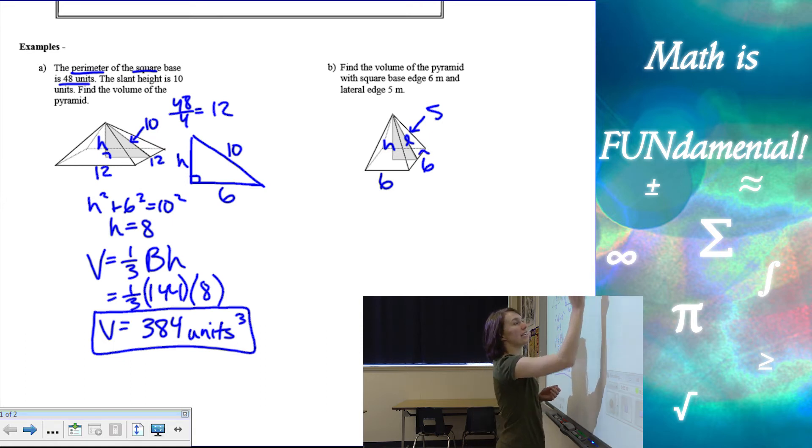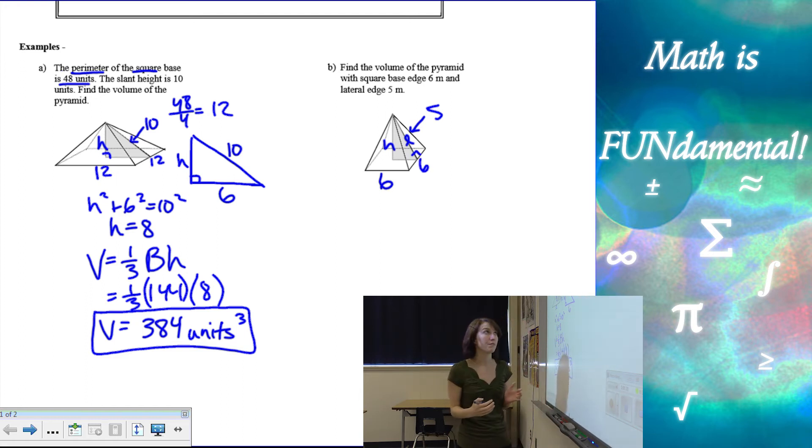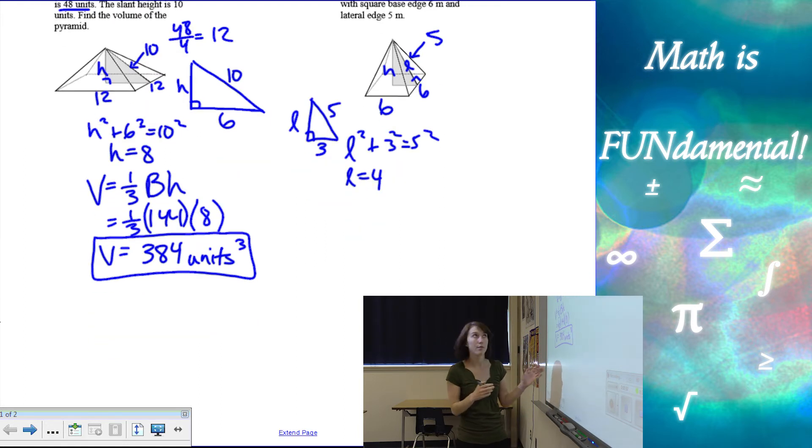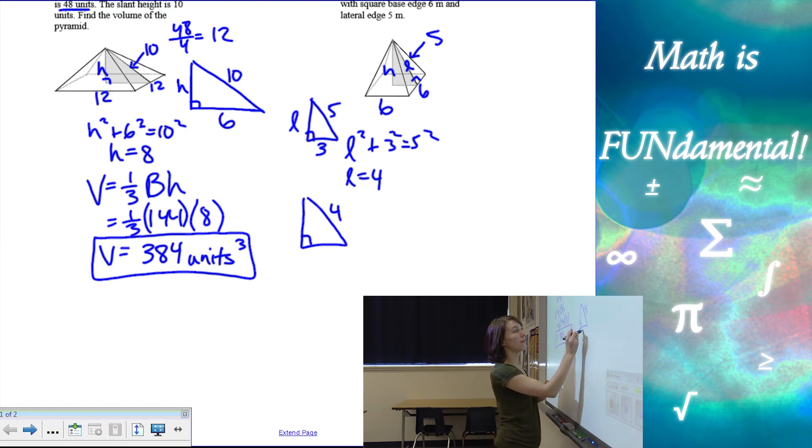So first thing we should know is that the slant height is perpendicular to the base edge. So I can use that right triangle there, and I know this is 5, L, and then half of the edge, which is 3. So L would be using our Pythagorean theorem, L² + 3² = 5², so L is 4. Now that I have the slant height, it's just like the last problem. I have this new right triangle with my slant height, half of the base edge, and the h, and I can use Pythagorean theorem again.